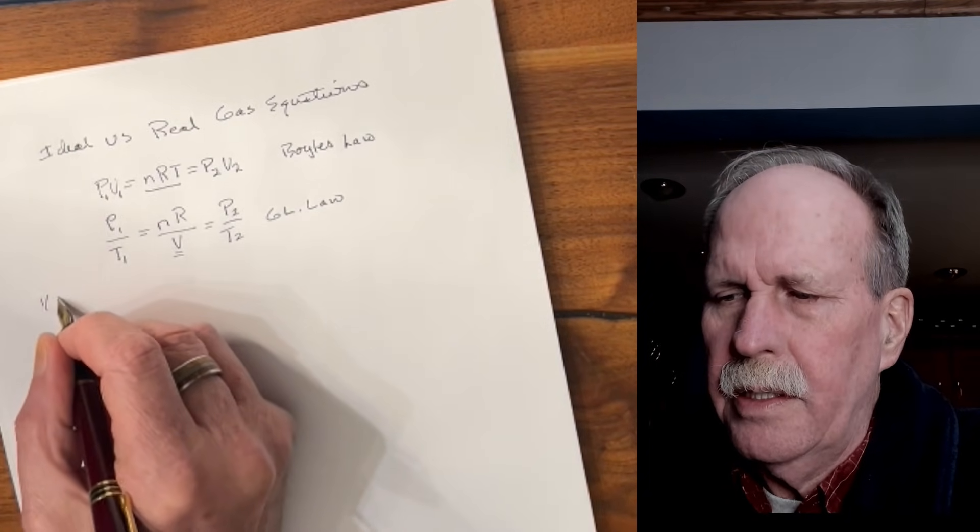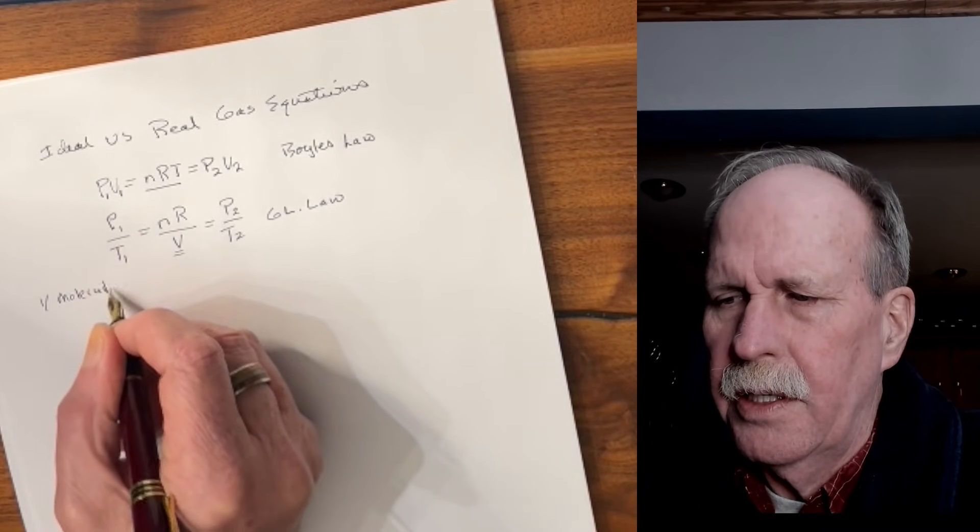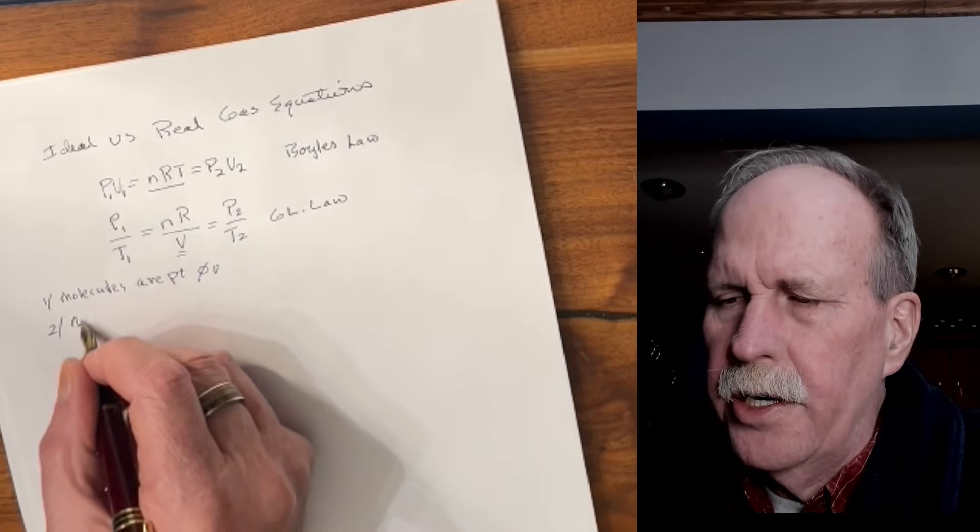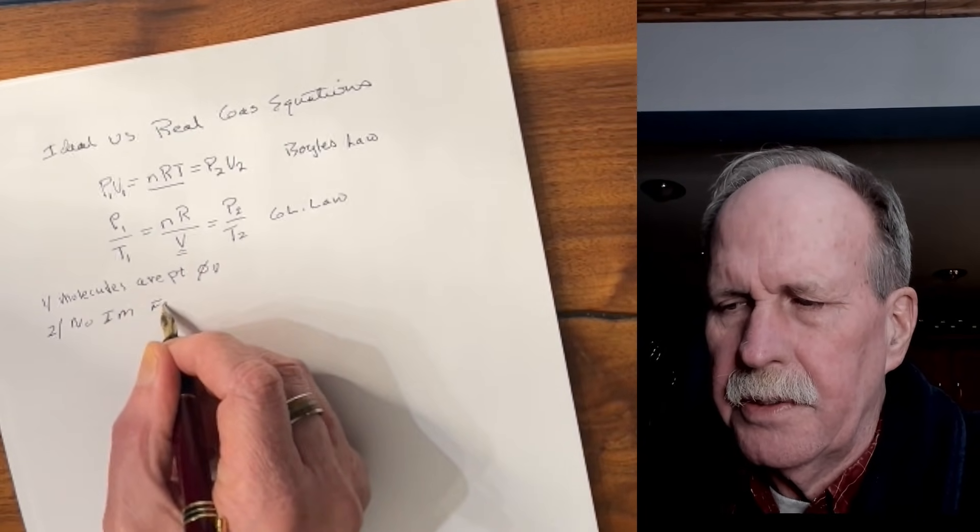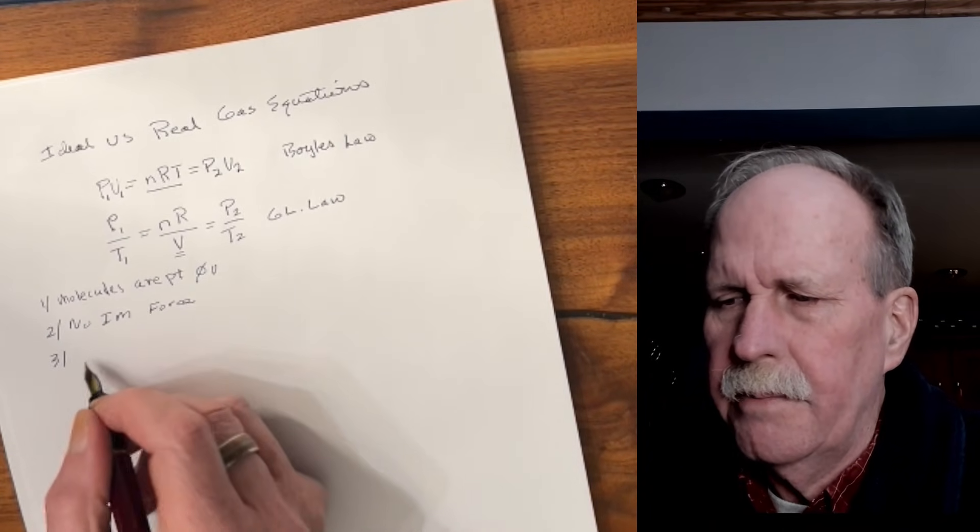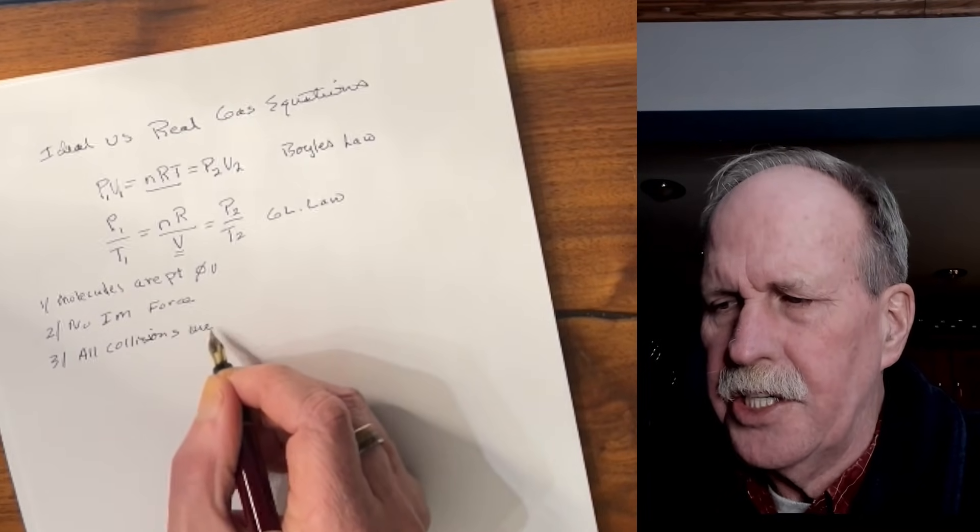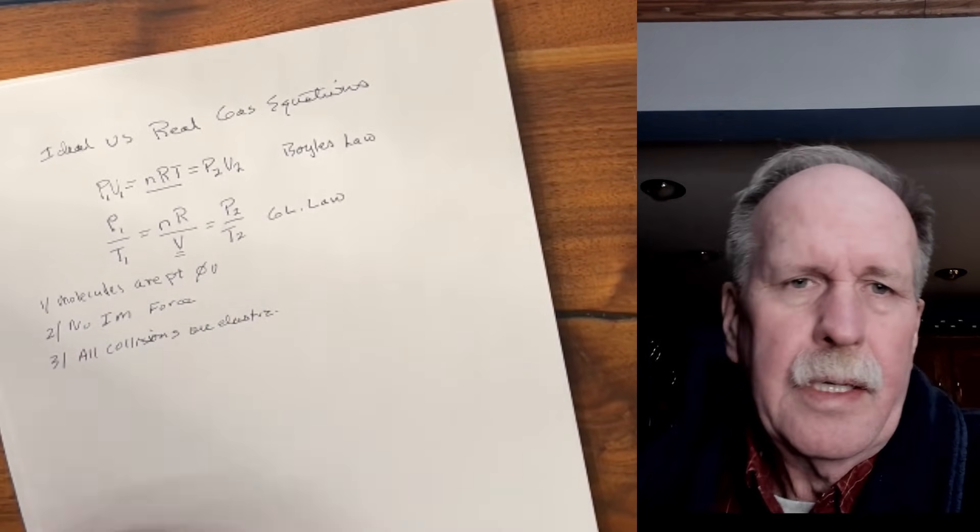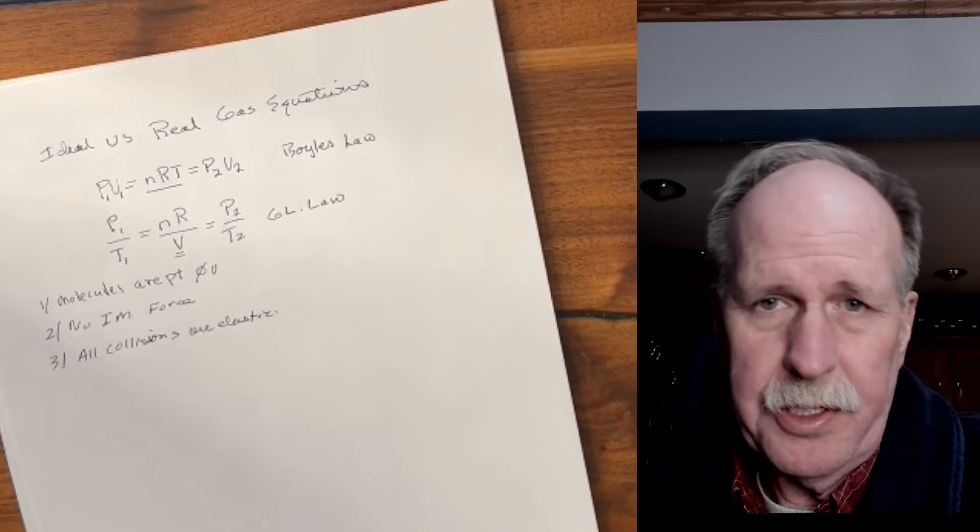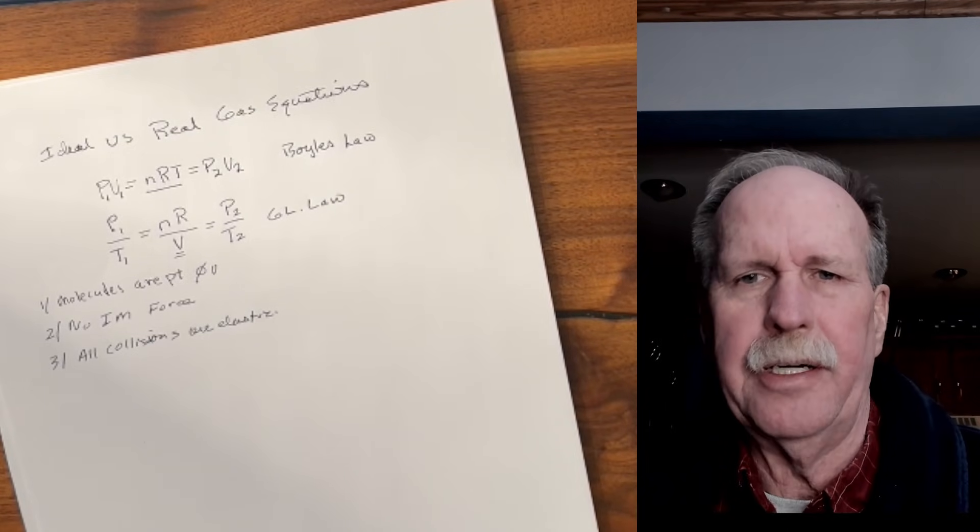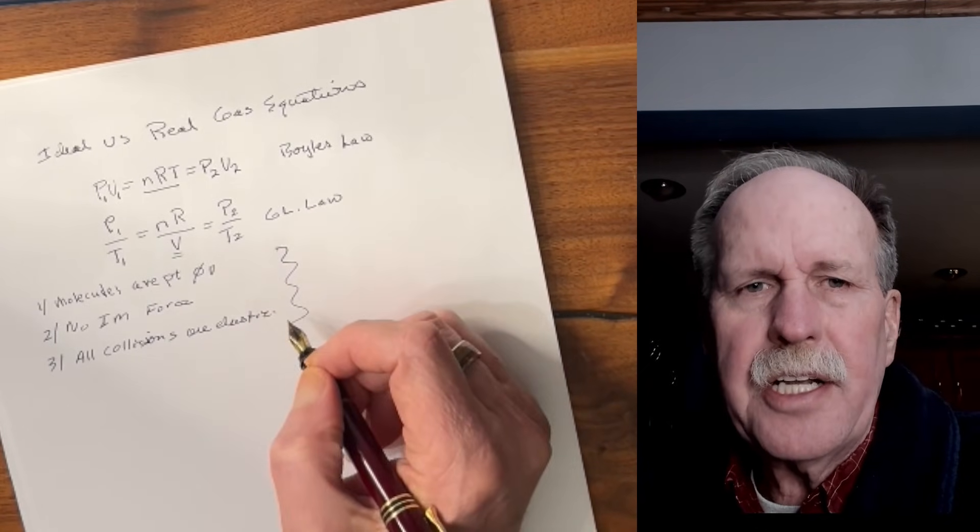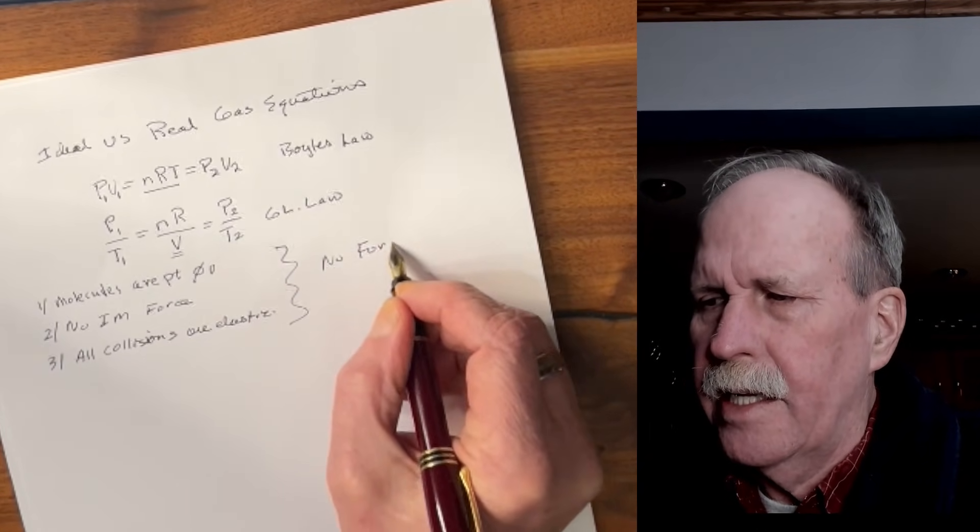And those characteristics are: one, the gas molecules are points with no volume. Two, there are no intermolecular forces. In other words, the gas molecules don't interact with each other. And number three, all collisions are elastic. That means that when one molecule bounces into another, all the energy is transferred to that second molecule. There's no cushion, there's no give.